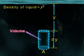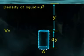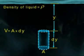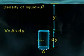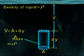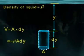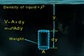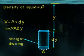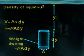The volume of this cylindrical element is V = A·dy. Its mass m = ρ·A·dy. And its weight is dw = mg = ρ·A·dy·g.